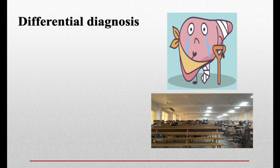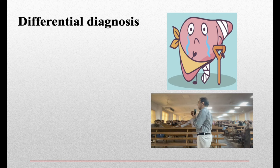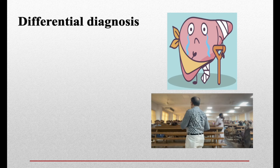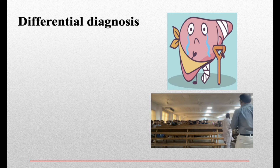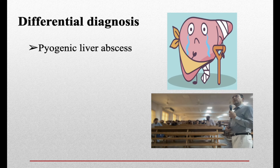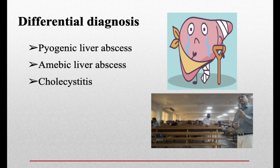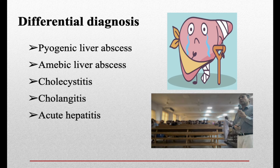Other differentials include acute hepatitis, gallbladder conditions such as cholangitis and choledocholithiasis — that is, stones in the ductal system rather than the gallbladder. So the differential diagnosis includes pyogenic and amoebic liver abscess, cholecystitis, cholangitis, and acute hepatitis.